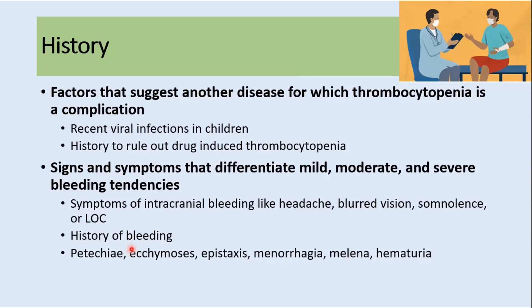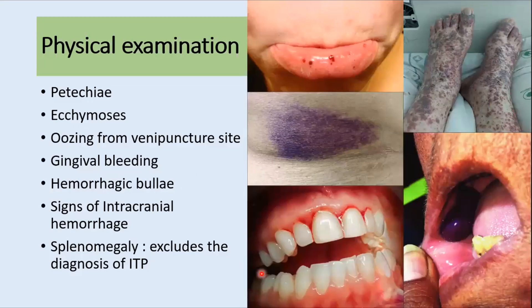We also need to ask about bleeding from other sites of the body, and about symptoms like petechiae, ecchymosis, epistaxis, or hematuria. On physical examination, we can find petechiae and ecchymosis, and there may be oozing from venipuncture sites if the platelet count is very low.